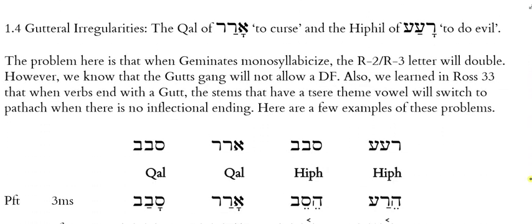The last thing from the Ross chapter is the fact that there are some irregularities with geminate verbs when we have gutturals involved. If I have a geminate verb and root 2 is a guttural, then root 3 is a guttural too, because roots 2 and 3 are identical to each other. You'll notice in the verb arar, my roots 2 and 3 are resh — they're both in the gutturals gang. That means to curse. And then the Hiphil of ra'ah — in the Kal this means to be evil, to be bad, to be displeasing, and the Hiphil means to do evil. Notice that roots 2 and 3 are identical and they're both gutturals.